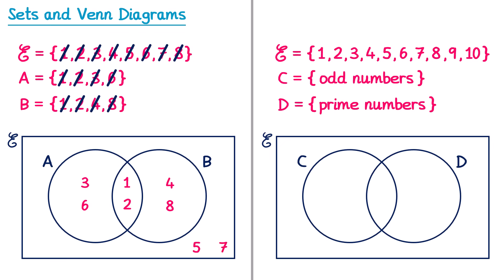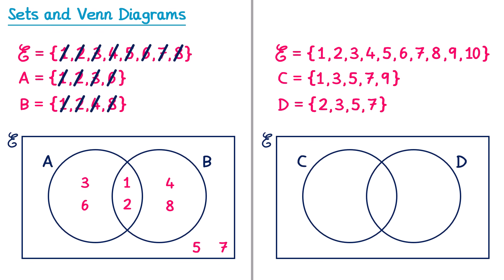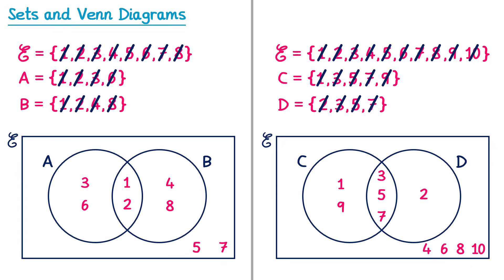For the second question, we need the odd numbers from 1 to 10 — which are 1, 3, 5, 7, and 9 — and the prime numbers from 1 to 10 — which are 2, 3, 5, and 7. The numbers in both sets C and D are 3, 5, and 7, so they go in the middle. The numbers only in set C are 1 and 9, going on the left. The number 2 is the only number just in D, going on the right. The numbers 4, 6, 8, and 10 go outside the circles but still inside the universal set.